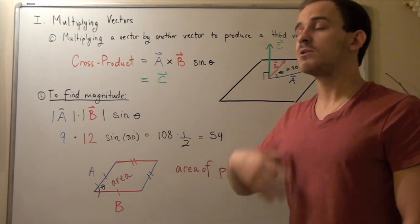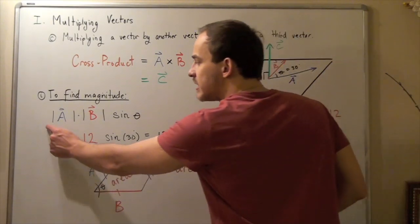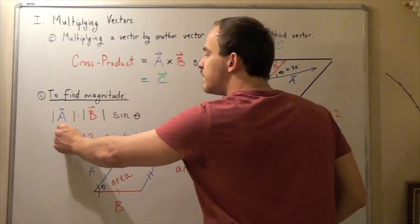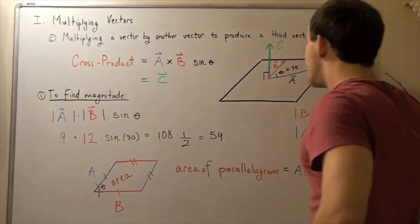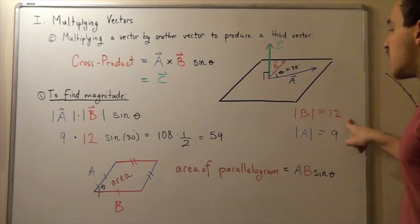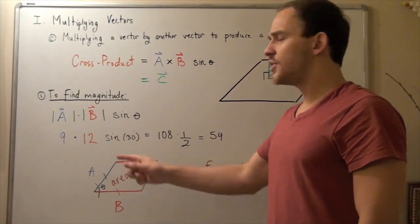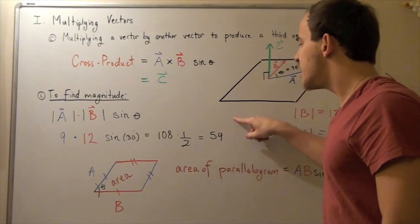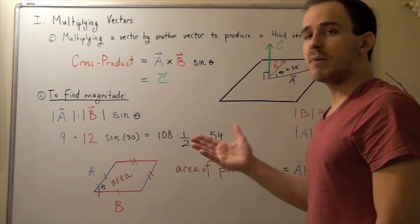To find the magnitude of the cross product, we multiply the magnitude of a by the magnitude of b by the sine of the angle between them. In this example, the angle is 30 degrees, the magnitude of a is 9, and the magnitude of b is 12. So: 9 times 12 times sine 30. Sine of 30 is one half, so 9 times 12 is 108, multiplied by one half gives 54. This is the magnitude of vector c, which points upward — a direction found using the right-hand rule.